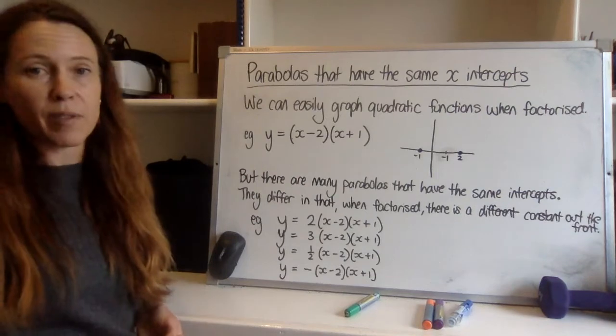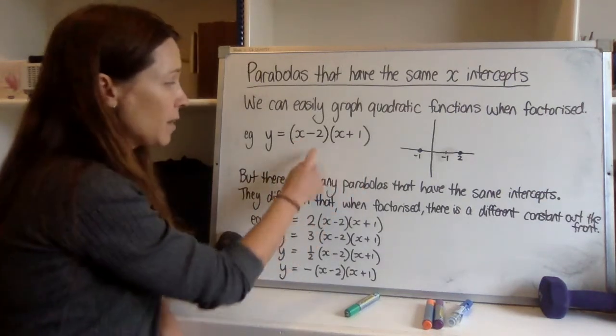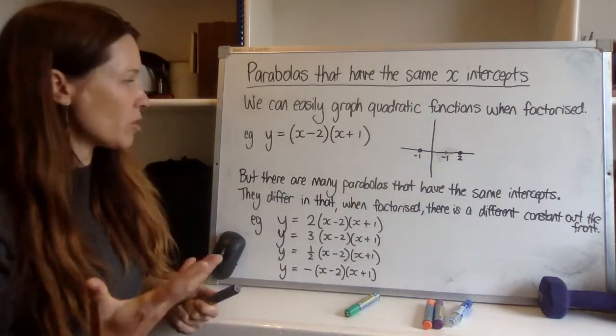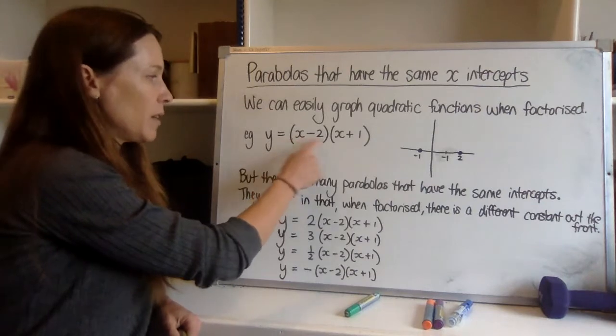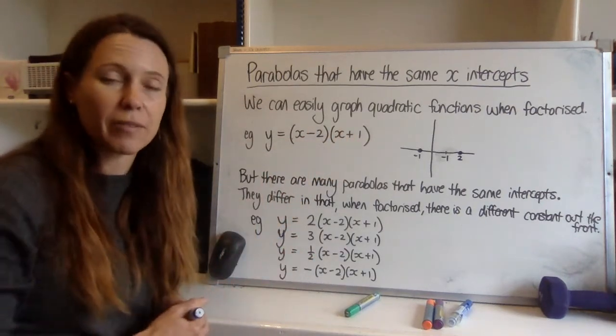We could also easily find the y-intercept if we wanted by reasoning that when we expand this out the last term will be negative 2, so we're going to have a y-intercept at negative 2. But we can also just sub in x equals 0 here and here, and so we've got negative 2 times 1, and that will give us the negative 2 as well.